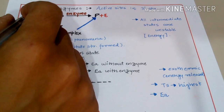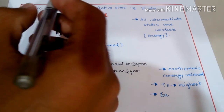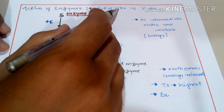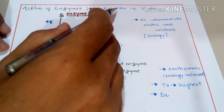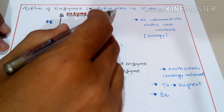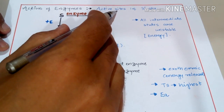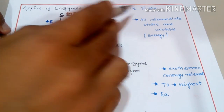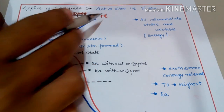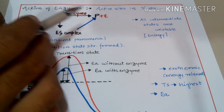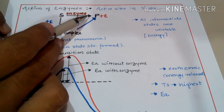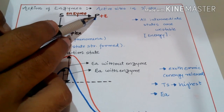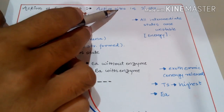Today we are going to talk about the action of enzymes. In the last lecture we talked about the active sites — the crevices, the loops, the different kinds of pockets present in the tertiary structure of an enzyme. These are known as the active site, because the substrate getting converted into product binds to the enzyme at that particular site.